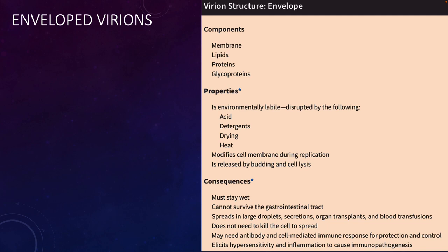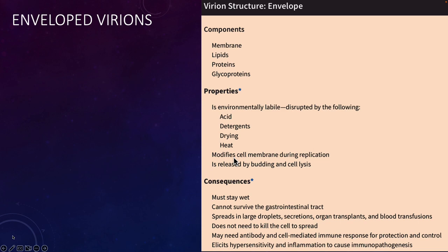With enveloped virions, what we see on the outside is a membrane — a phospholipid bilayer — containing lipids, proteins, and glycoproteins. The challenge is that enveloped viruses are environmentally labile: if you disrupt the envelope, you eliminate infectivity. Things like acid, detergents, drying, and heat are pretty good at disrupting enveloped viruses.